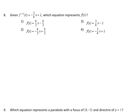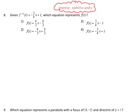Number eight: they give us the inverse function and want to know which equation represents the original function f(x). The shortcut is that finding the inverse of the inverse brings you back to the original function. So let's find the inverse of this. Whenever we find the inverse, all that means is we switch the x and the y — this is just a fancy way of saying y equals. So we make the output x, and change the x to a y, then get y by itself.